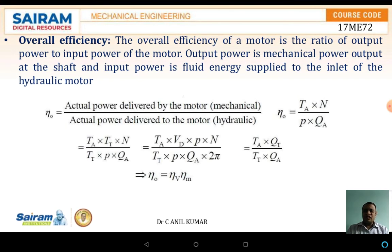The overall efficiency of the motor is the ratio of the output power to the input power of the motor. The output power is the mechanical power at the shaft, and the input power is the fluid energy, which is the pressure. In simplified form, the equation is: overall efficiency = T_A × N / (P × Q_A).